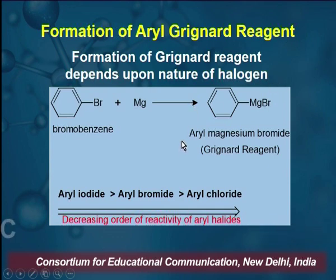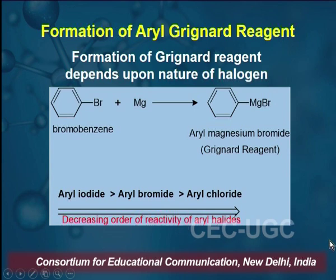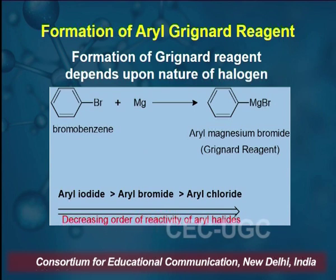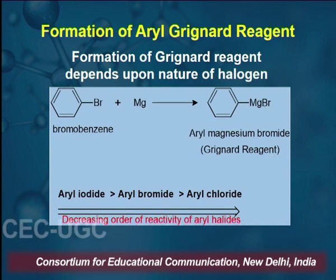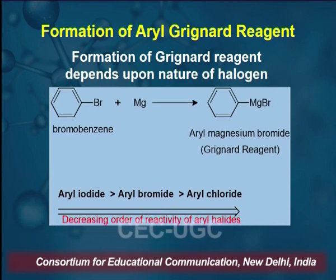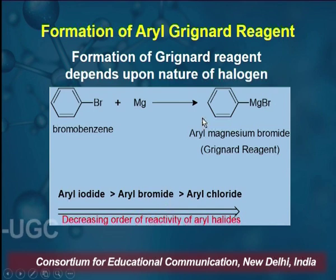Formation of aryl Grignard Reagent is similar to the preparation of alkyl Grignard Reagent — alkyl magnesium halides. In the case of bromobenzene, when it is reacted with magnesium, it results in the formation of aryl magnesium bromide. The reactivity order of aryl halides is: aryl iodide > aryl bromide > aryl chloride — this is a decreasing order, depending on the nature of the halide.